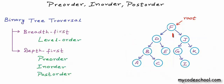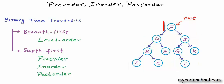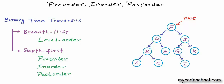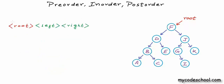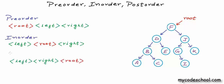For example, we can first visit the right subtree, then the root, then the left subtree — or first the root, then left, then right. Conventionally, the left subtree is always visited before the right subtree. With this constraint, we have three permutations. Root then left then right is called preorder traversal. Left then root then right is called inorder traversal. And left then right then root is called postorder traversal.